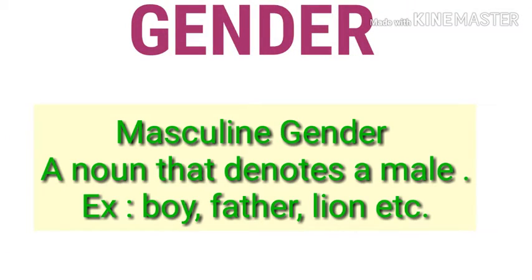The first kind of gender is masculine gender. A noun that denotes a male is known as masculine gender. When we talk about males, it is known as masculine gender. Examples include boy, father, lion, and hero — these are known as masculine gender.